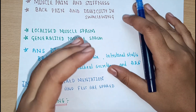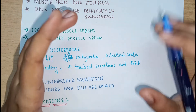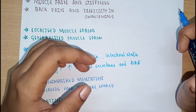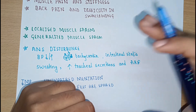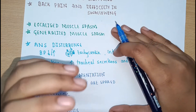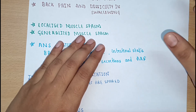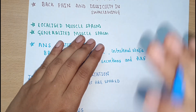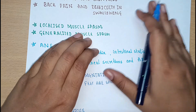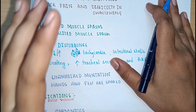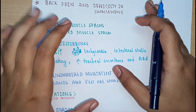Toxin internalization occurs; it reaches the pre-synaptic inhibitory neuron terminals and prevents the release of GABA and glycine. GABA and glycine are inhibitory neurotransmitters — when released, they cause muscle relaxation. In tetanus, the exotoxin inhibits the release of these inhibitory neurotransmitters, completely preventing muscle relaxation. That is why there is spastic muscle contraction — continuous abnormal prolonged muscle contraction — which is a characteristic feature of this disease.